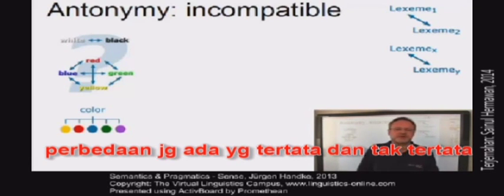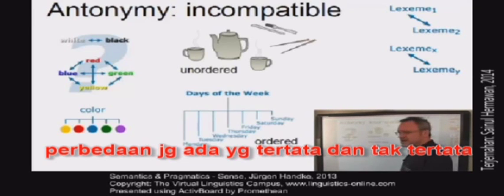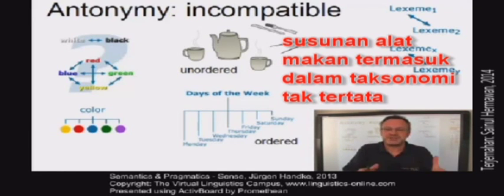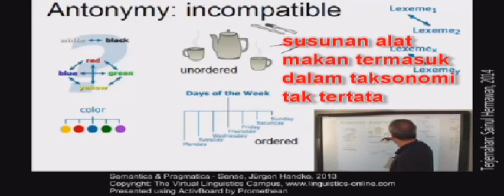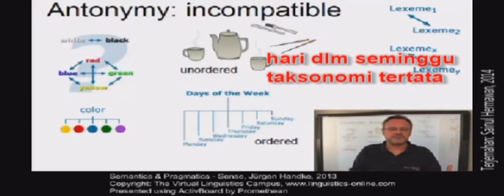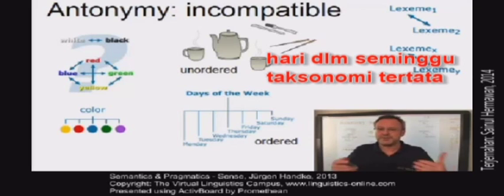A distinction is sometimes made between ordered and unordered taxonomies. For example, there is no natural way, as far as the meaning is concerned, to arrange the set of kitchen utensils such as cup, pot, fork, and knife in any kind of order. By contrast, the days of the week constitute an ordered taxonomy.